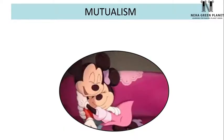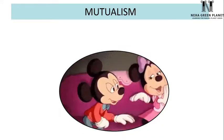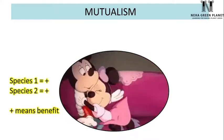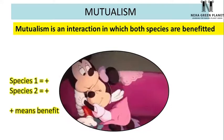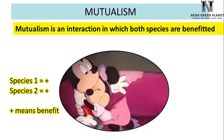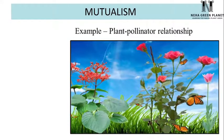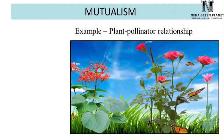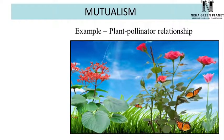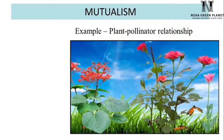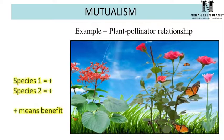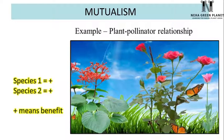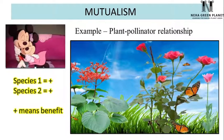Mutualism is an interaction in which both species are benefited — species 1 as well as species 2 get a positive outcome. For example, in a plant-pollinator relationship, plants provide nectar or food to pollinators like butterflies. In return, butterflies help in spreading pollen to another plant, meaning they help in cross-fertilization. Both species benefit, so this plant-pollinator interaction is mutualism.